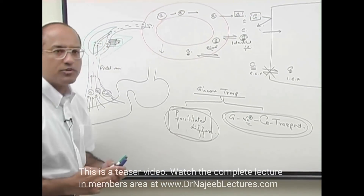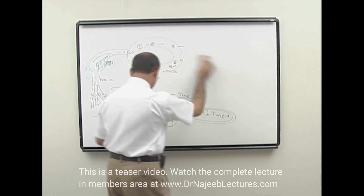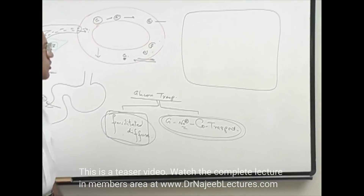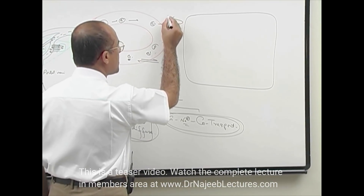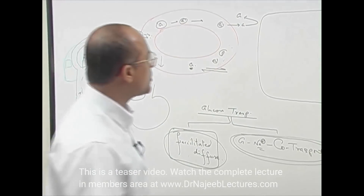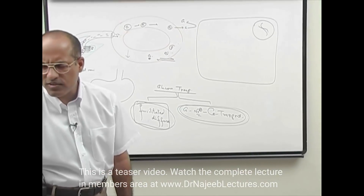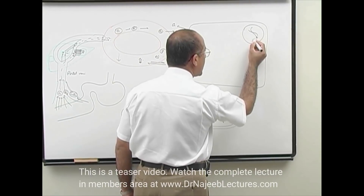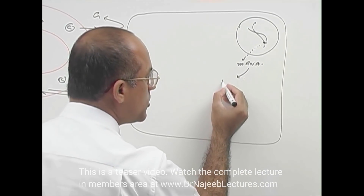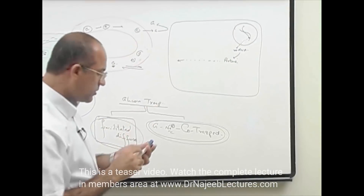I will explain the mechanism of facilitated diffusion. Let's suppose this is a cell and it wants to take up glucose. As I told you, glucose cannot pass through the membrane. So we need some transport mechanism. What really happens is that in the nucleus there are genes, DNA, and some genes express and make messenger RNA. When that messenger RNA is translated into proteins, those proteins go into and get planted into the membrane.